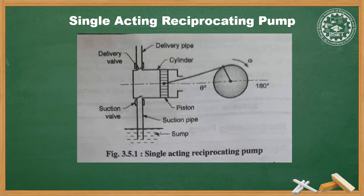In the suction stroke, the crank rotates from 0 to 180 degrees. The piston moves backward, creating a partial vacuum in the cylinder. Due to this, the suction valve opens and liquid from the sump is sucked into the cylinder through the suction pipe. In the delivery stroke, the crank rotates from 180 to 360 degrees. The piston moves forward, creating high pressure, and the plunger pushes the liquid out through the discharge valve while the suction valve is closed.